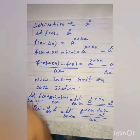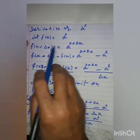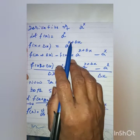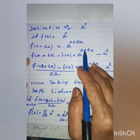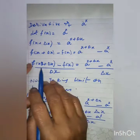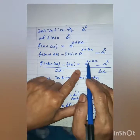Now, the derivative of a to the power x. Let function f of x is equal to a to the power x, then f of x plus delta x is equal to a to the power x plus delta x. f of x plus delta x minus f of x will be equal to a to the power x plus delta x minus a to the power x. Dividing both sides with delta x, then f of x plus delta x minus f of x dividing by delta x will be equal to a to the power x plus delta x minus a to the power x dividing by delta x.